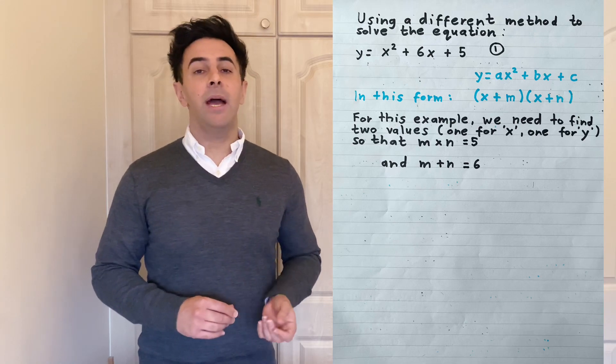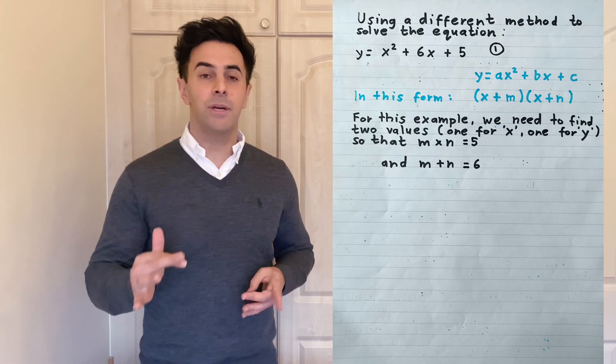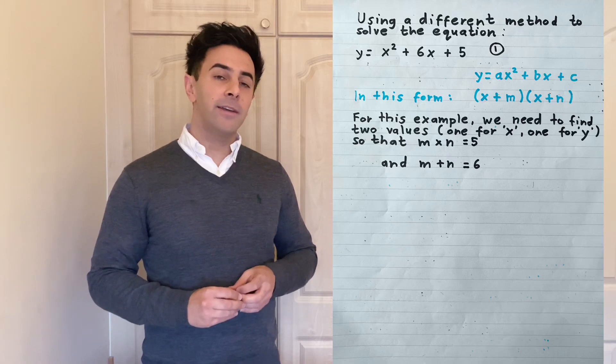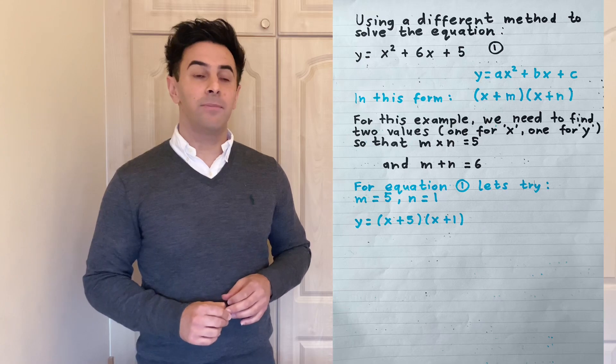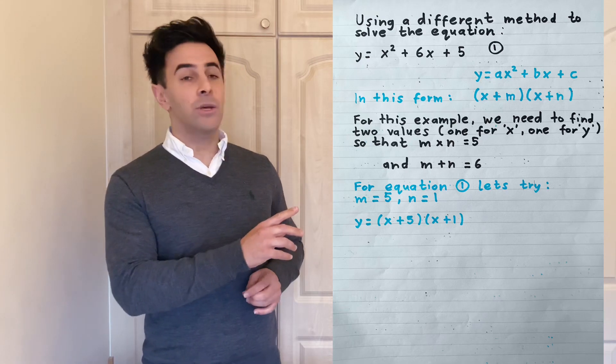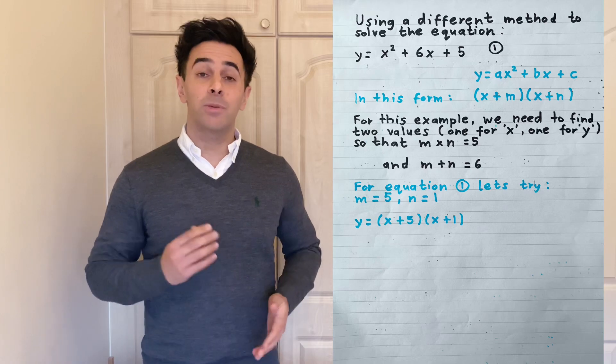So this can be a process of trial and error. So basically what we have to do is find these two numbers. We're going to try 5 and 1. So m equals 5 and n equals 1. We'll input those values into the equation so we have x plus 5 all times x plus 1.